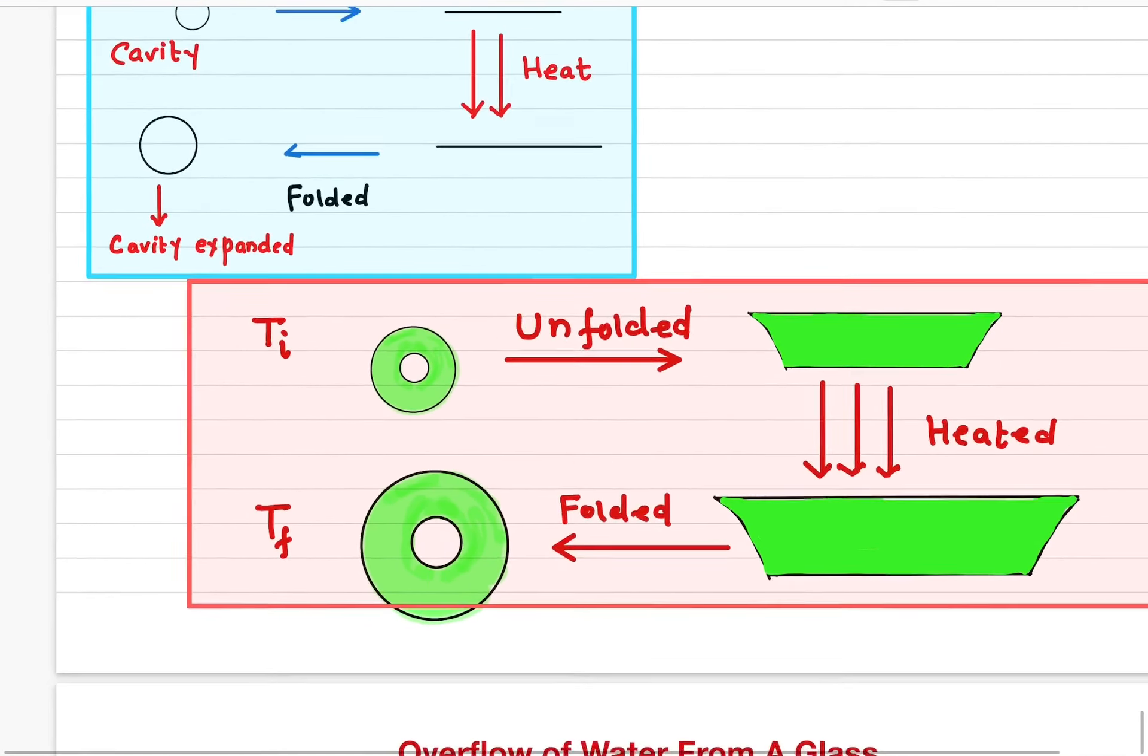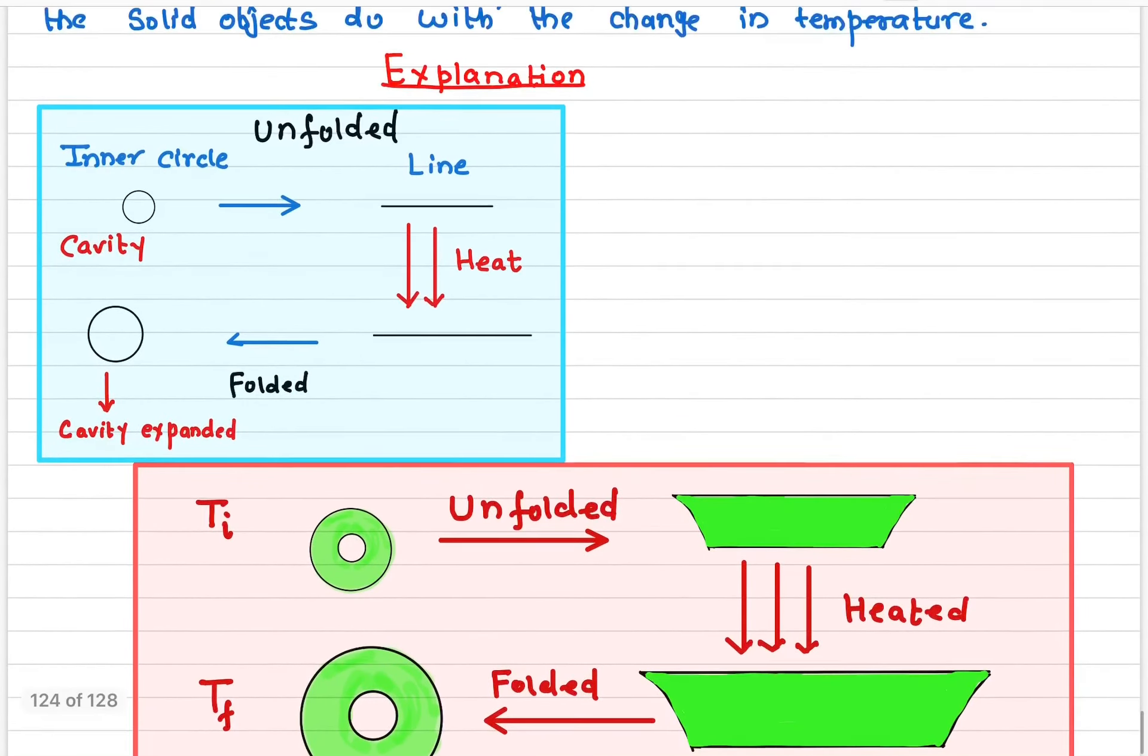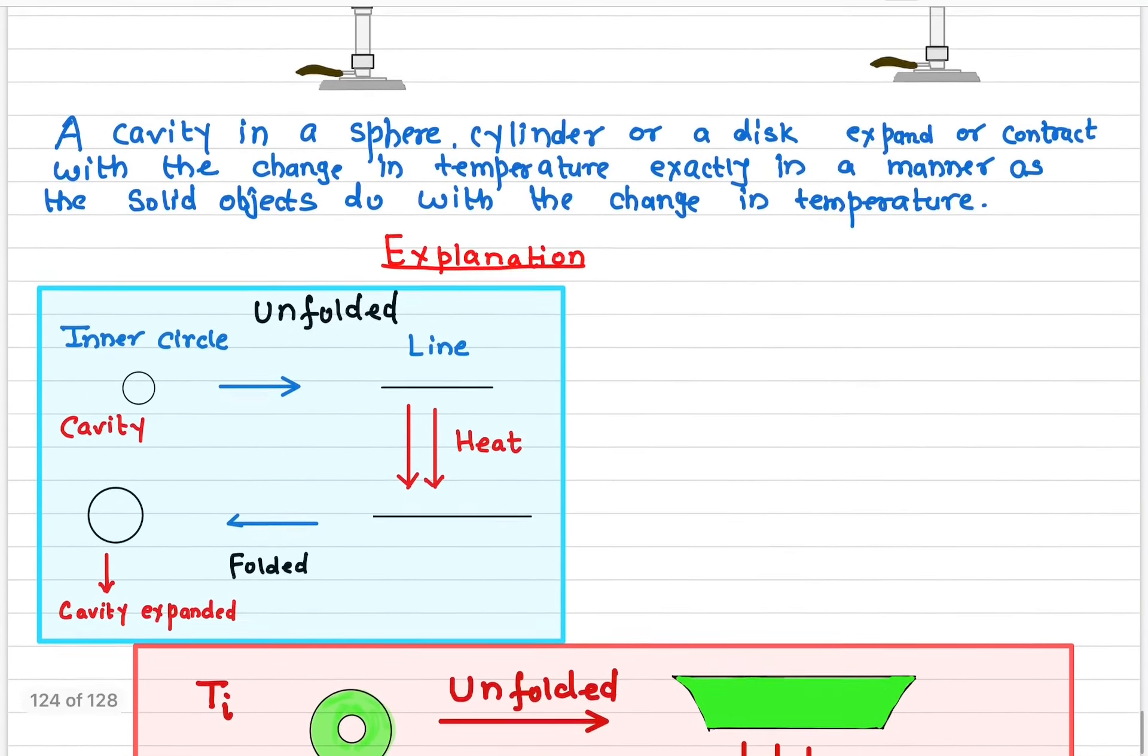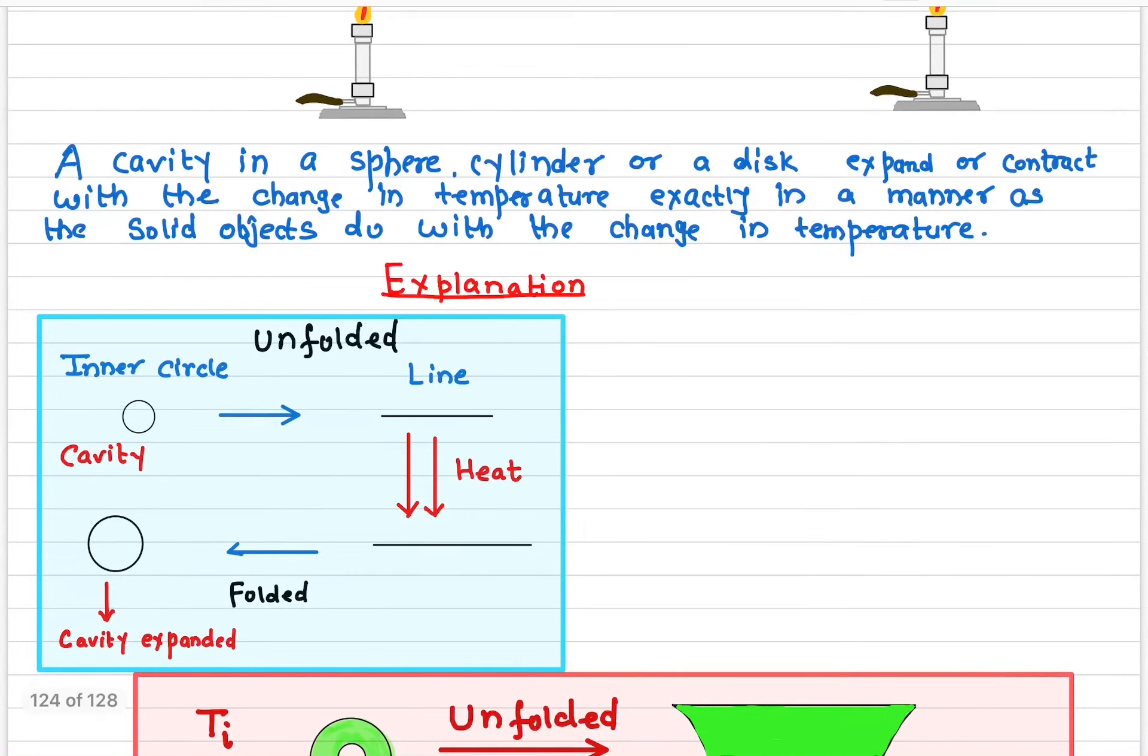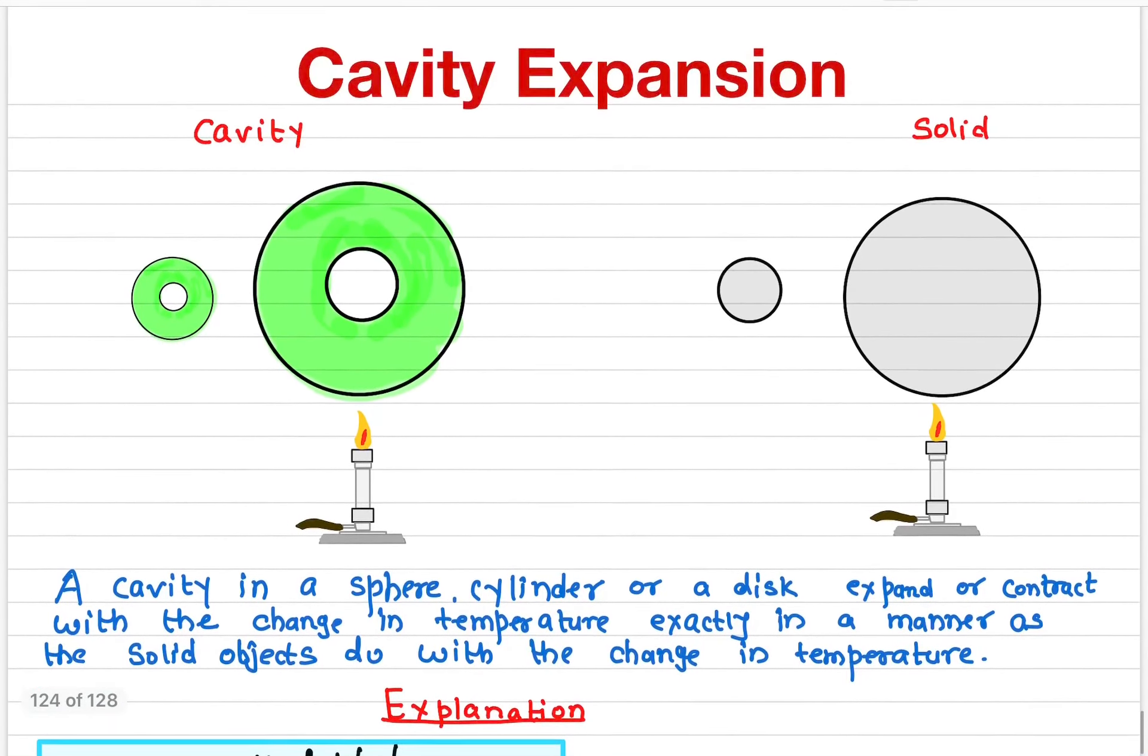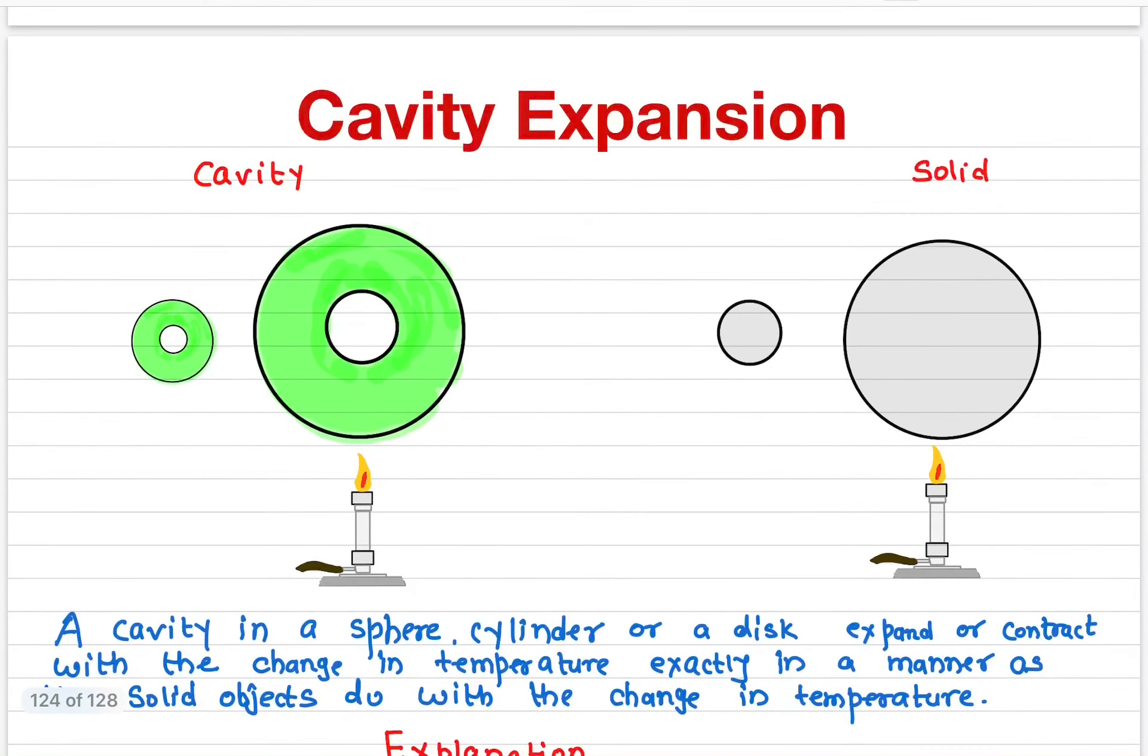If you fold it back to the circle you will see a larger cavity, a larger circle here. So that tells you the cavity expands in exactly a manner as a solid object does with the change in the temperature. So the learning of this lesson is if you have a cavity inside a material, then the cavity will expand exactly in a manner as a solid object will do with the change in the temperature.